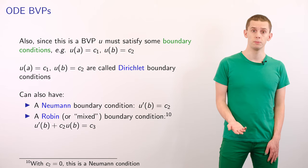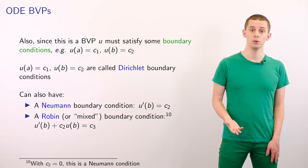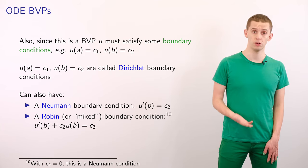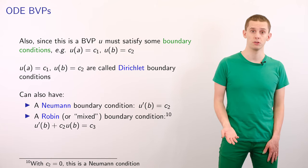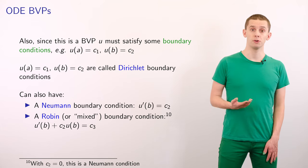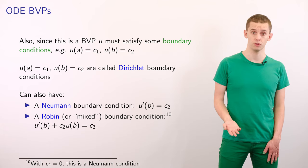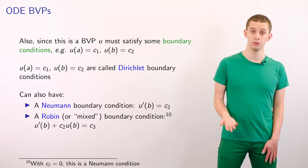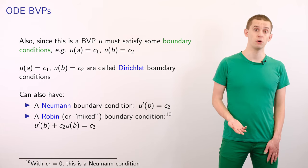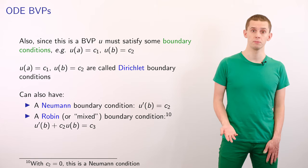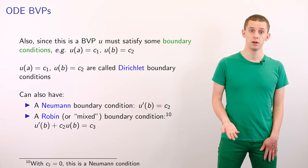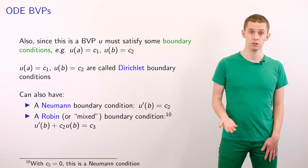Since this is a boundary value problem, our function u must satisfy some boundary conditions. For example, we could set u of a equal to c1 and u of b equal to c2 — conditions where we set the function value equal to something are referred to as Dirichlet boundary conditions. Other types include the Neumann boundary condition, where we set the derivative, for example u prime of b equal to c2, and Robin or mixed boundary conditions, where we set a linear combination of the function and its derivative equal to something, for example u prime of b plus c2 u of b equal to c3. Notably, all of these conditions are linear in the function and/or its derivative, which means we can use techniques of linear mathematics to solve them.